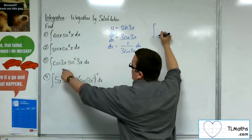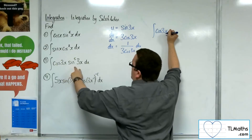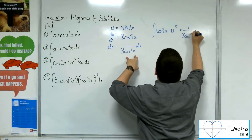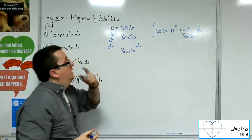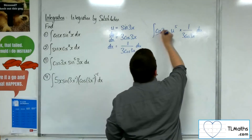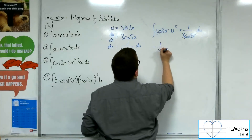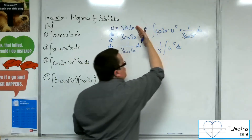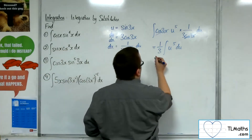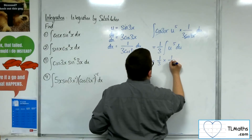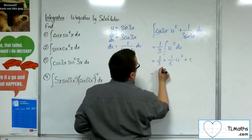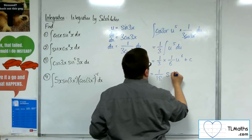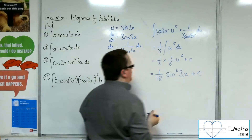So now our integral becomes: we've got the cosine of 3x, then we've got u to the power of 5, and the dx is replaced with times 1 over 3 cosine 3x du. You can see cosine of 3x cancels top and bottom. I can bring that one third outside of the integral, and I'm going to have the integral of u to the 5 du. I then want to add 1 to the power and divide by the new power: 1 third times 1 sixth u to the 6 plus c, so we'll have 1 over 18. I can replace the u back with sine of 3x, so sine to the 6 of 3x plus c.